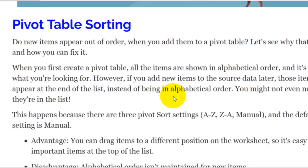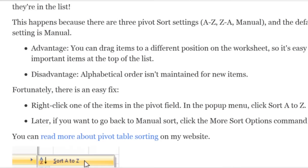This happens because there are three sort settings in a pivot table: A to Z, Z to A, or Manual. When you create a new pivot table, the default sort order is Manual — it looks alphabetical but it's manual, so you can drag things to different positions. When new items are added they just go to the bottom. If you want new items to appear in correct alphabetical order, right-click one of the items in that field and in the pop-up menu click Sort A to Z. That makes it an automatic sort, and you can always go back to manual later.